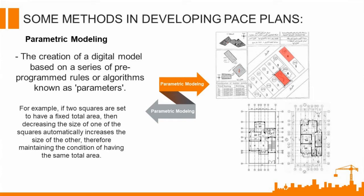Another method is through the use of parametric modeling. This is the creation of a digital model based on a series of pre-programmed rules or algorithms known as parameters. For example, if two squares are set to have a fixed total area, then decreasing the size of one of the squares automatically increases the size of the other, therefore maintaining the condition of having the same total area.